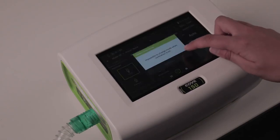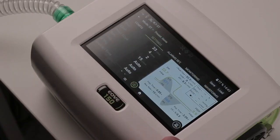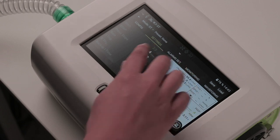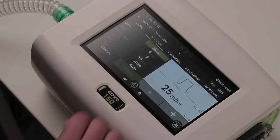From the settings tab, you can set the ventilation parameters. For that, you need to select the parameter you want to modify, adjust it, and validate.